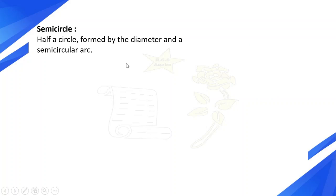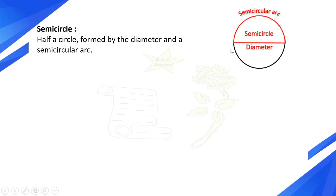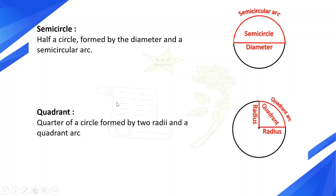Semicircle: half a circle formed by the diameter and a semicircular arc. This is the semicircle. Quadrant: a quarter of a circle formed by two radii and a quadrant arc.